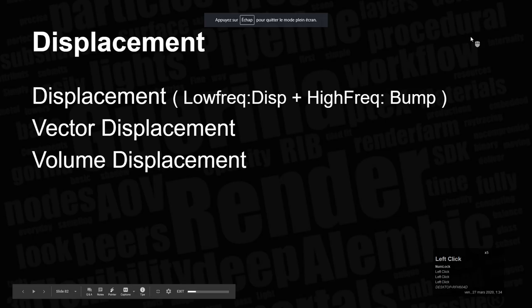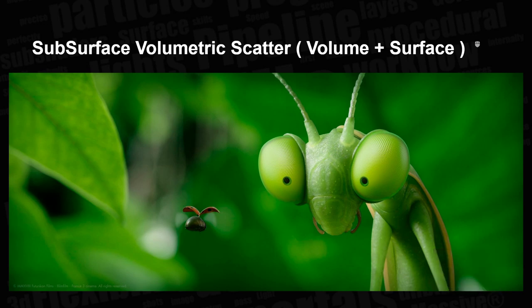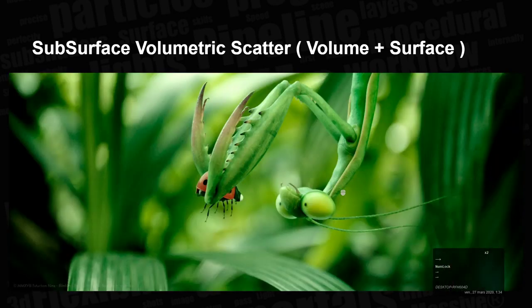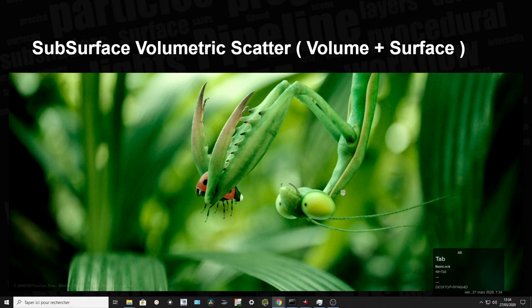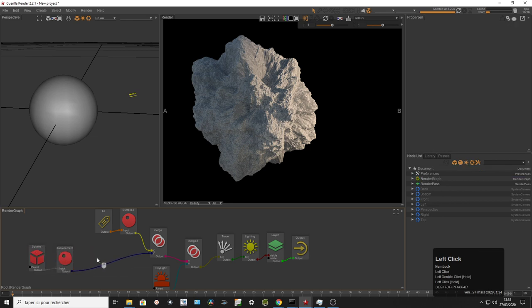Displacement changes the vertex position of objects. Low frequency is displacement; high frequency turns to bump to optimize the system. You can use vector displacement, volume displacement, and create super complex results like the images from Minuscule 2. That object was a mix between a volume shader and a surface shader, creating a wonderful mantis effect — the whole look development team at Yard created that. I'm going to show you how to get a basic rig for that kind of effect.